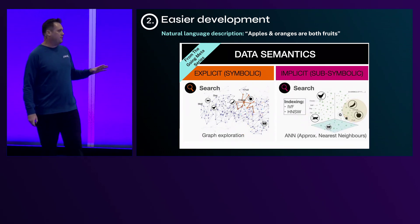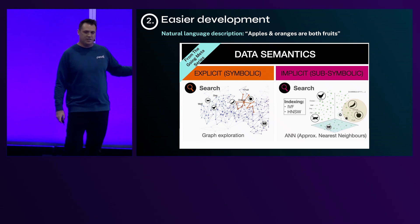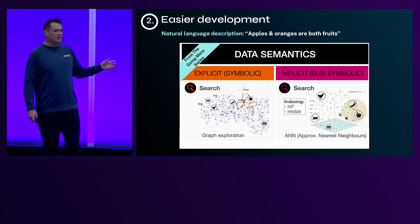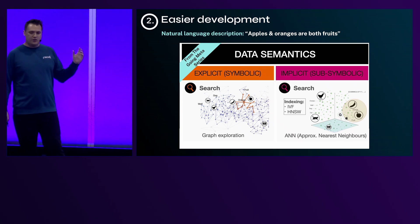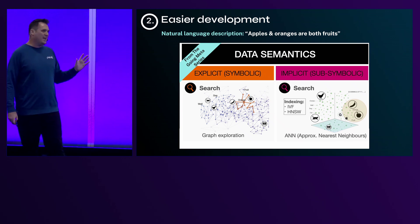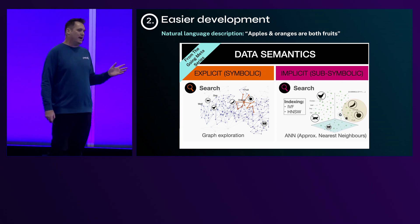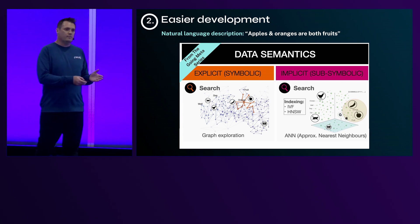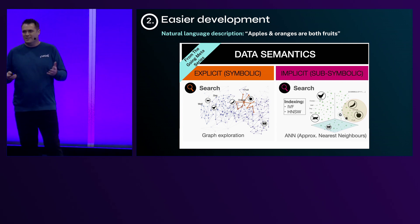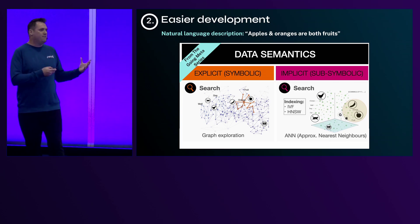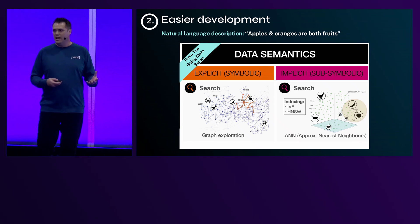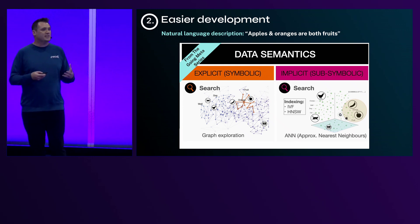In a knowledge graph, you have an explicit topology where neighbors are counted in hops — one hop, two hops away. In a vector world, you have geometry. We're told — and I think this is strictly incorrect — that near means similar. It doesn't. Near means near. There's a lot of context that's missing, and that's why you see people doing a solely vector-based approach end up with results that just don't make sense and are very hard to explain.